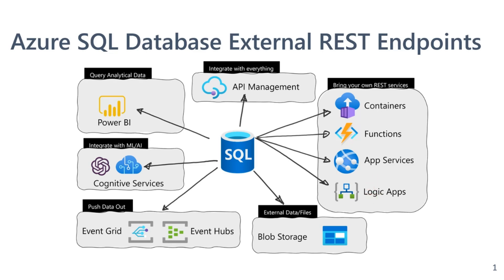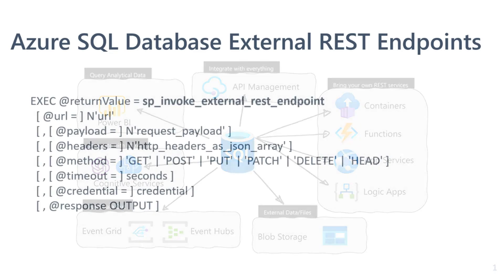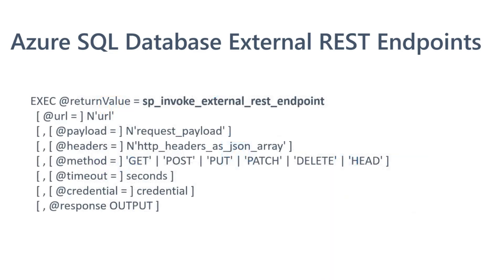The main idea is that when you are in Azure SQL DB and you want to execute any of these REST APIs, you have a stored procedure available to do so. Execute the stored proc, pass the parameters, and you'll be triggering a REST API request to a different service.